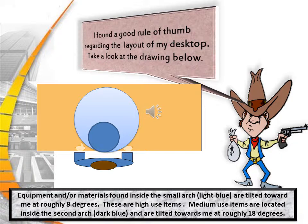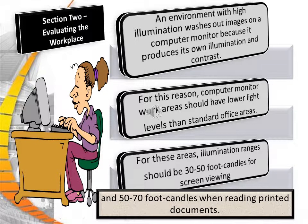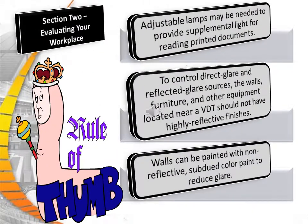An environment with high illumination washes out images on a computer monitor because it produces its own illumination and contrast. Computer monitor work areas should have lower light levels than standard office areas — illumination ranges between 30 to 50 foot candles for screen viewing, and 50 to 70 foot candles when reading printed documents. Adjustable lamps may be needed to provide supplemental light. To control direct and reflected glare, walls, furniture, and equipment located near the VDT should not have high reflective finishes. Walls can be painted with non-reflective subdued color paint.